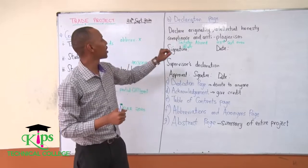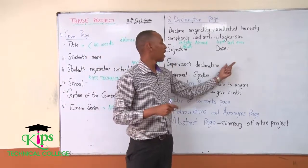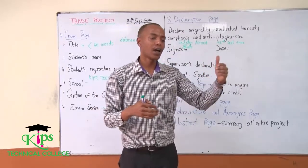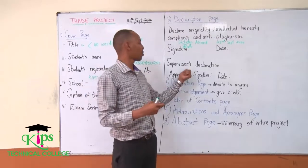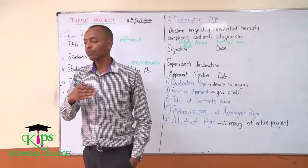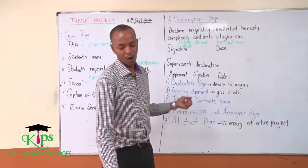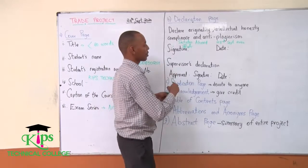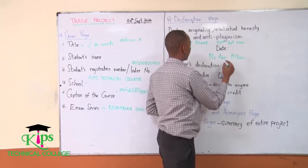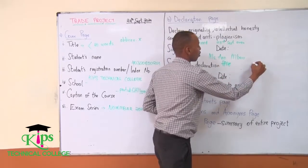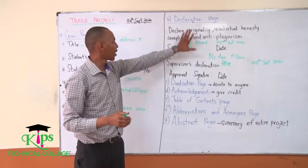Still on the declaration page, you have to include the supervisor's declaration. The supervisor must have a note saying this project was presented to, for example, Mr. Benson G, as the college supervisor, and where they say they have approved it for marking. Since projects are sent to KNEC, they look to confirm the project was approved by the college supervisor. The supervisor comes and puts their signature and the date. That's all under the declaration page.